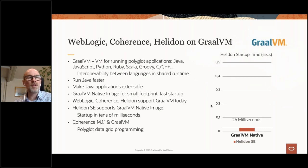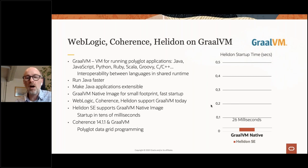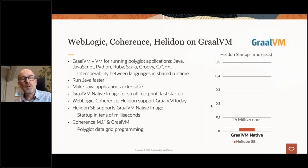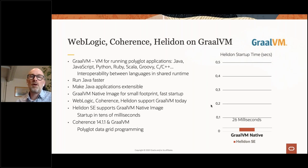GraalVM is an alternative way of running your applications — a replacement for the Java VM — making Java faster, a lot faster, in startup time and execution time. It's compatible with existing software like WebLogic and Coherence, and also runs other languages: JavaScript, Python, Ruby, etc., with interoperability between these languages at the execution level.